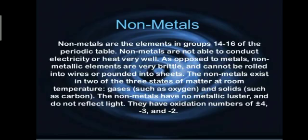Non-metals are the elements in groups 14 to 16 of the periodic table. They are not able to conduct electricity or heat very well. As opposed to metals, non-metallic elements are very brittle and cannot be rolled into wires or pounded into sheets. Non-metals exist in two of the three states of matter at room temperature — gases and solids, such as oxygen and carbon. Non-metals have no metallic luster and do not reflect light.